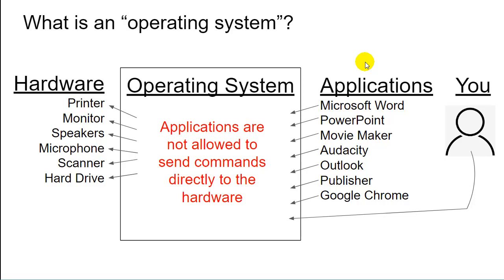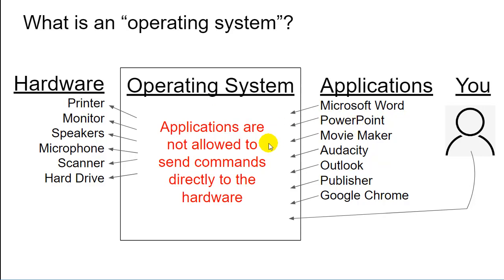The operating system will not let applications, or even you, directly affect the hardware. Applications are not allowed to send commands directly to the hardware, because bad actors could write applications to do harmful things — like erasing the hard drive or sending dangerous signals to the monitor. The operating system would block that. Applications can only make a request to the operating system, and the operating system will handle the hardware.